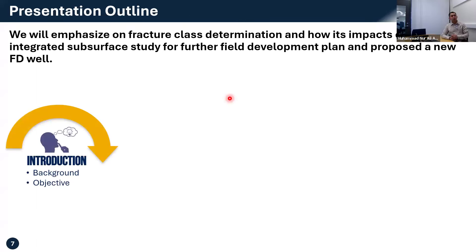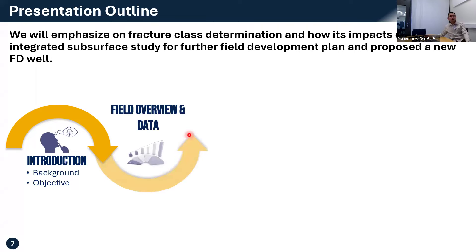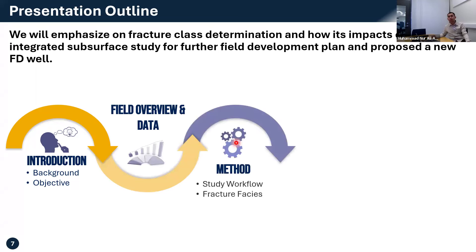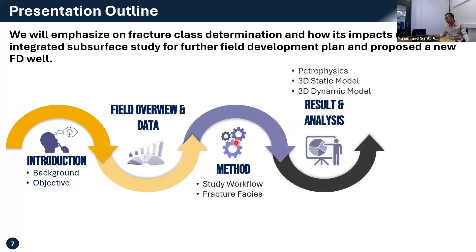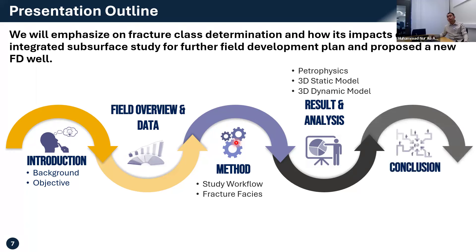The outline today will start with introductions and the background of the field case study, and also how we integrated the approach from geoscience and engineering to have a better plan for creating the reservoir model — in order to make a better field development plan and propose new field development in old or mature fields. I will cover field overview, dataset, study workflow, fracture facies, and importantly the results and analysis: petrophysics, 3D static model, and 3D dynamic model in a best practice approach. Then I will close with conclusions.